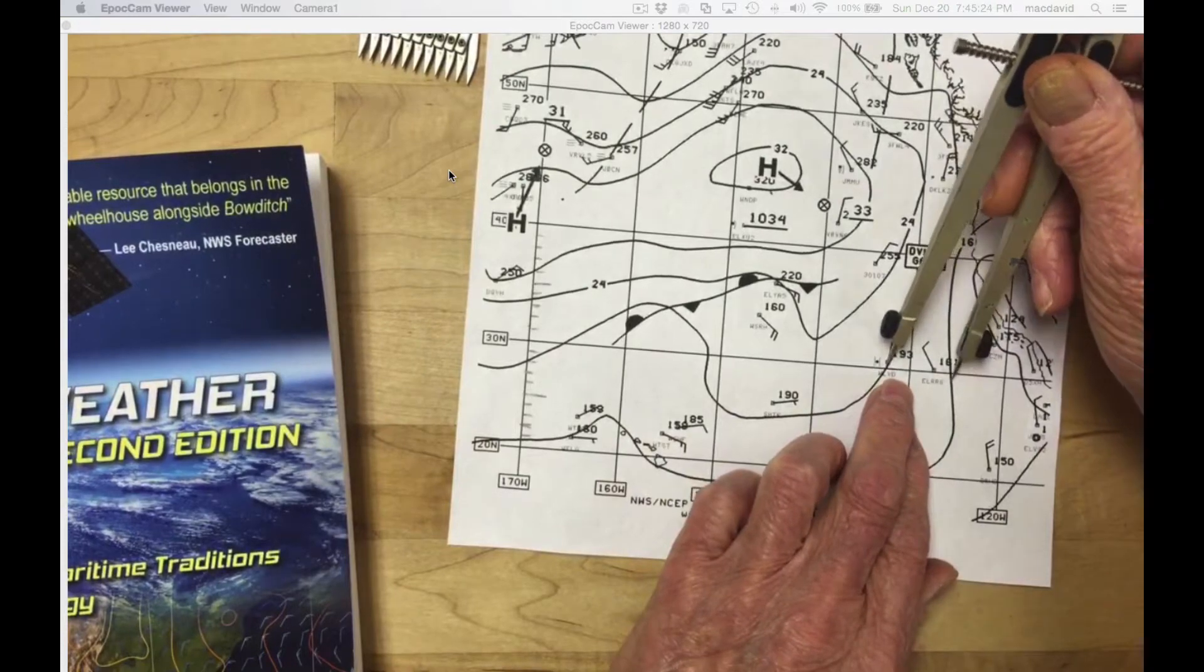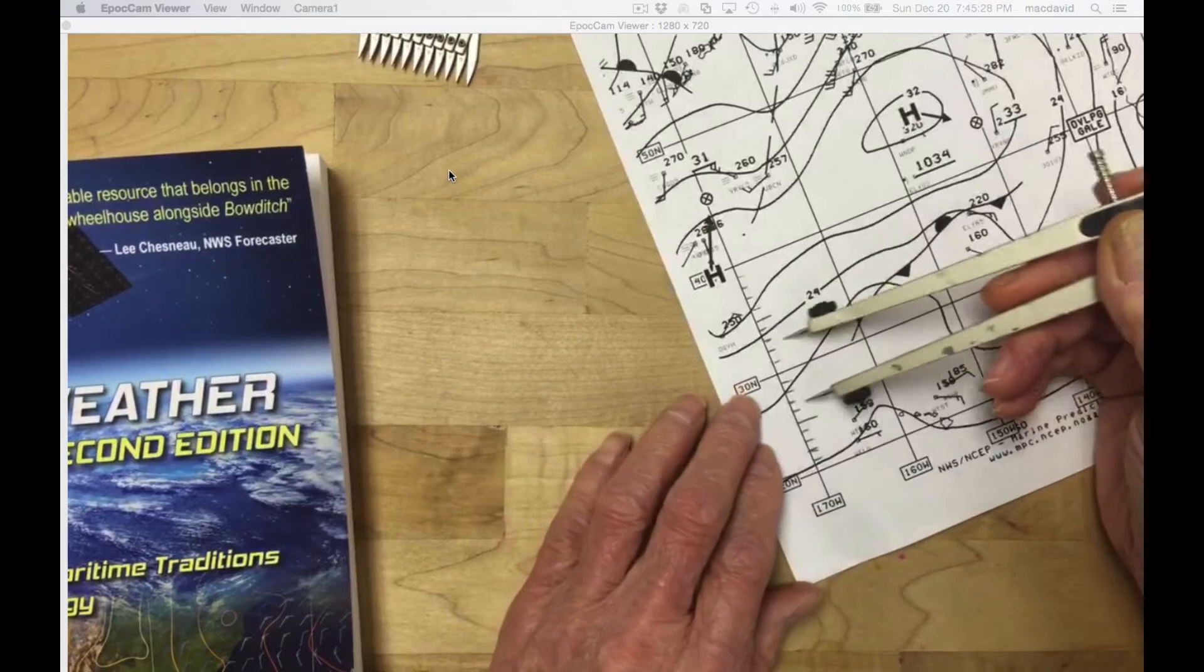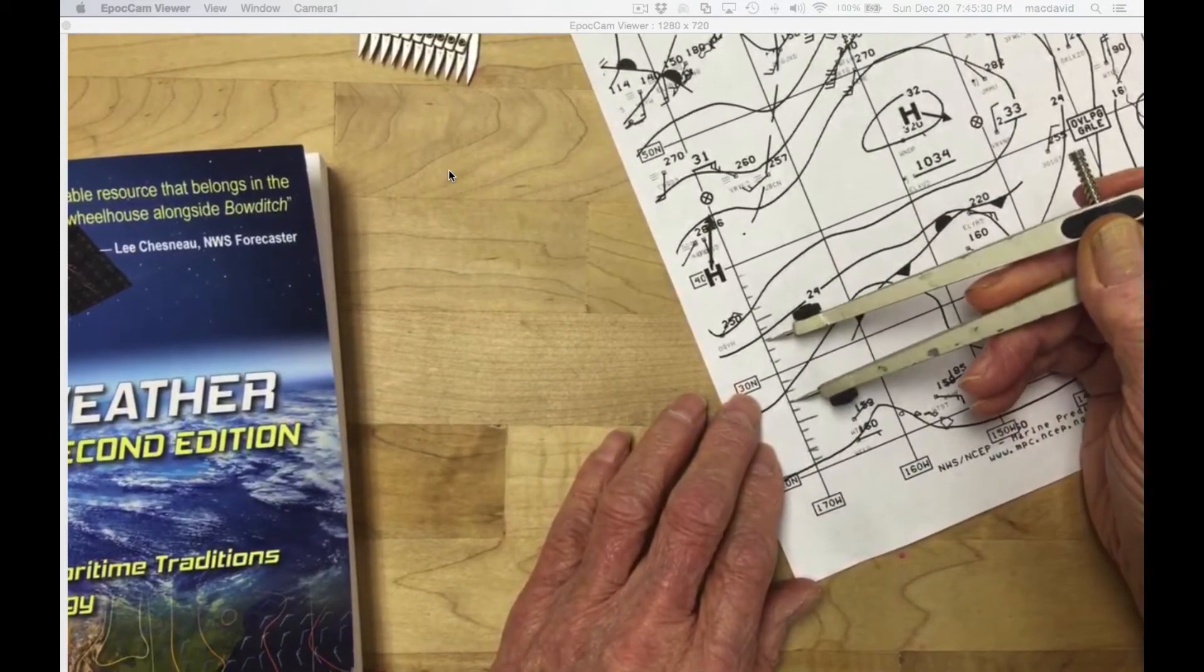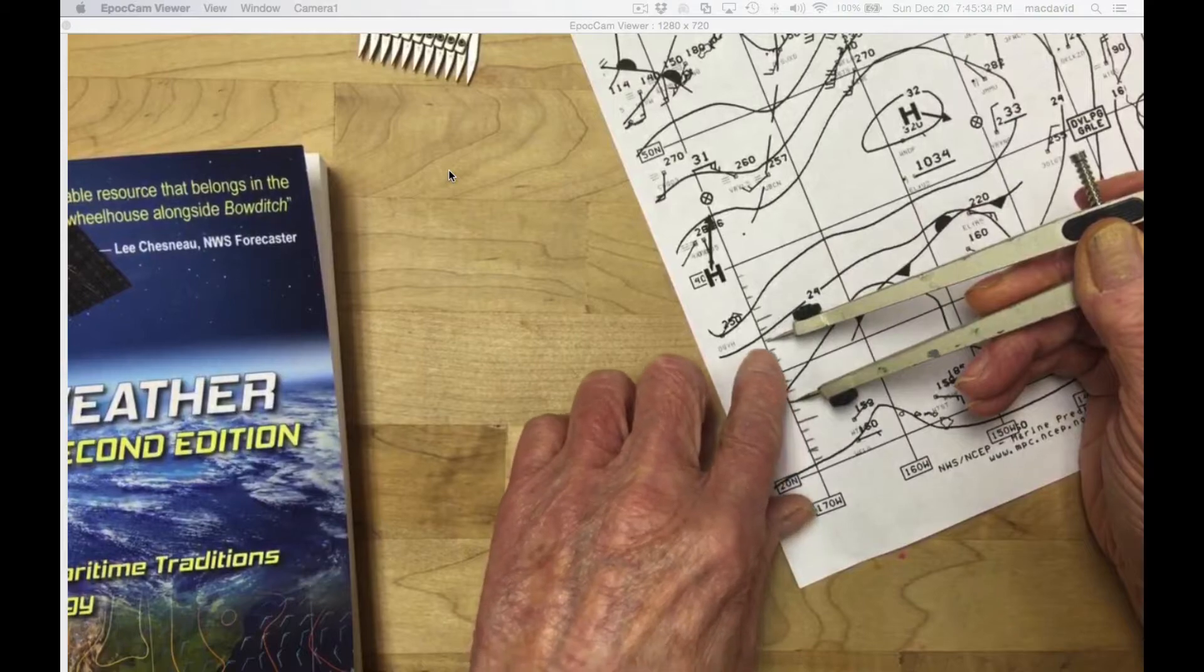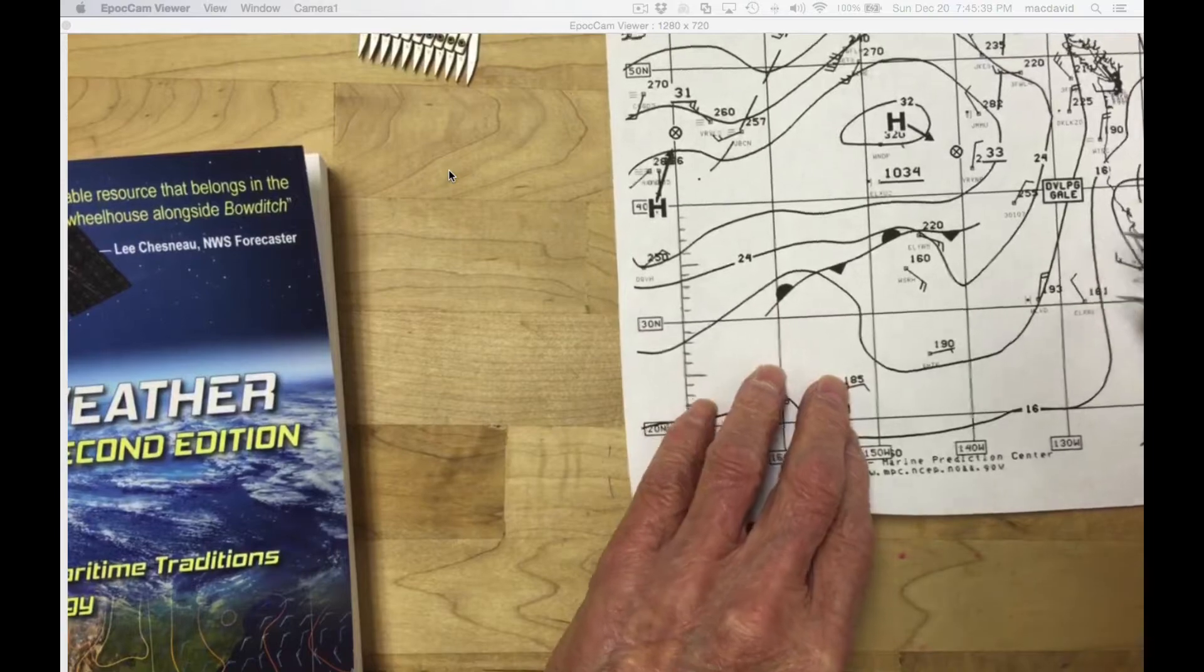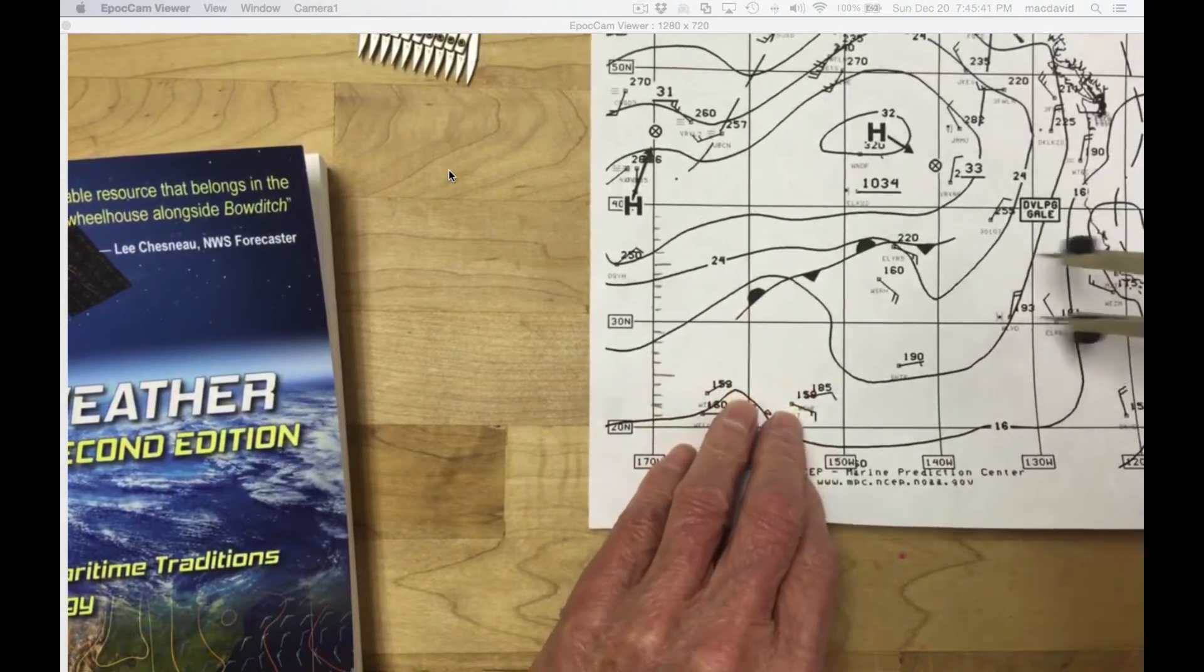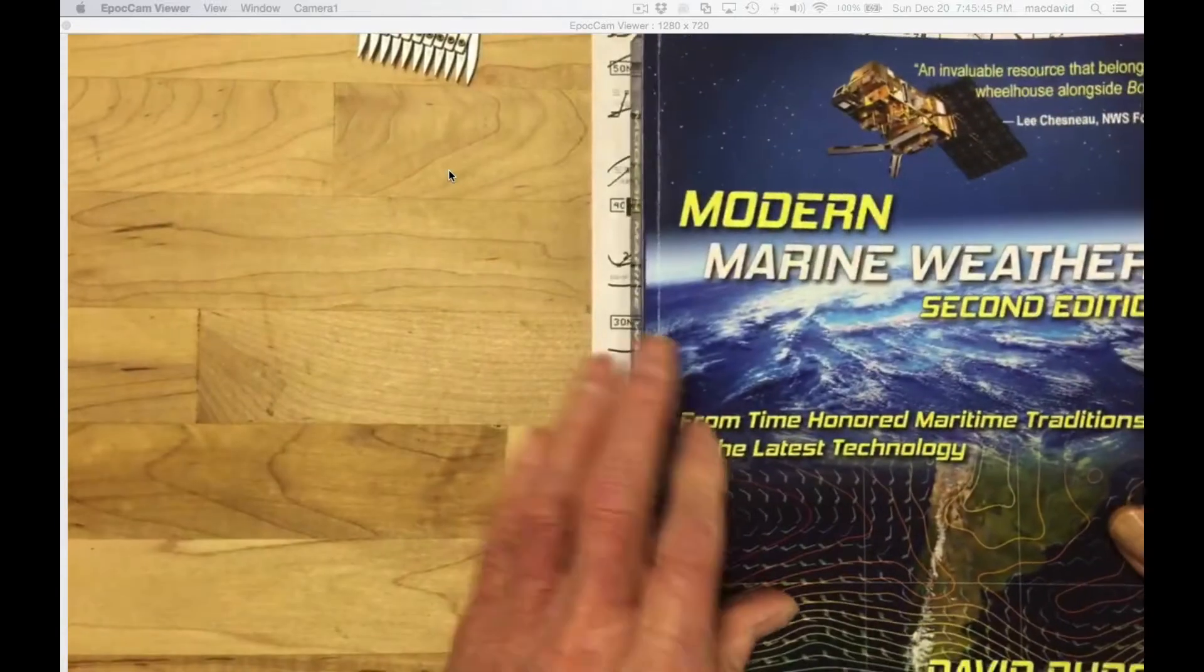We need to find out what is the spacing between these isobars at this point. Something like this is the distance, like that, and then take that over to our scale somewhere here in the middle. We've got one, two, three, four, five, six - it's 360 miles, so it's six degrees of latitude.